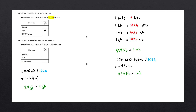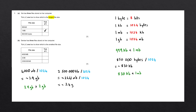The next one we have is 2,500,000 kilobytes. We want to convert this into gigabytes. To get to gigabytes, we first have to convert it into megabytes, as you can see from our conversion table. So we take 2.5 million kilobytes and divide by 1024 to get megabytes. This gives us approximately 2441 megabytes. We now want to convert this into gigabytes by dividing by 1024 again, which gives us approximately 2.4 gigabytes. So 2.4 gigabytes is less than 3.9 gigabytes.